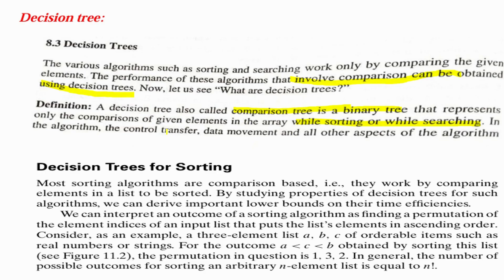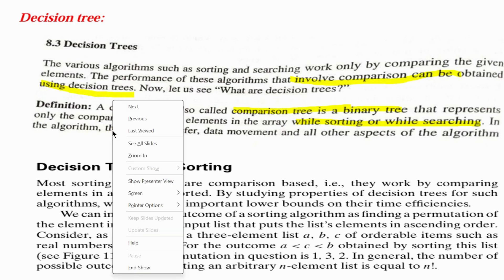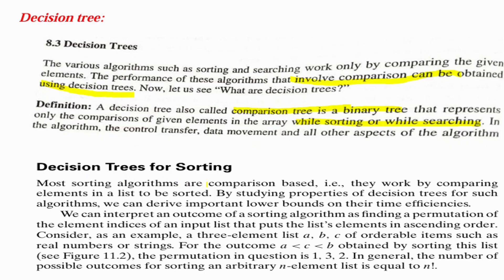Looking into decision trees for sorting: most sorting algorithms are comparison based. Be it any sorting, we compare elements with neighboring elements, increment or decrement values as seen in previous videos — they work by comparing elements in a list to be sorted. By studying the properties of decision trees for such algorithms, we can derive important lower bounds on their time efficiencies. We can interpret an outcome of a sorting algorithm as finding a permutation of the element indices of an input list that puts the list elements in ascending order.